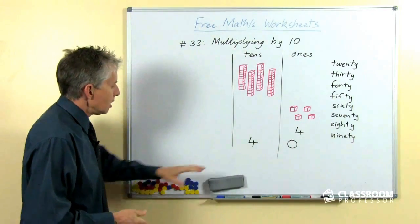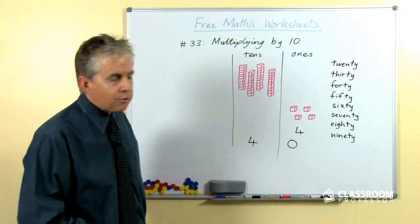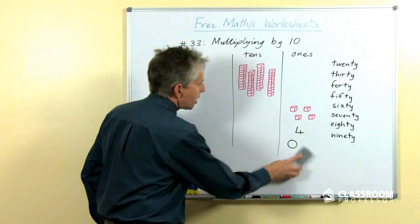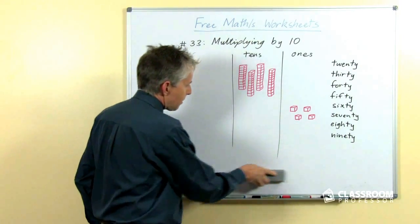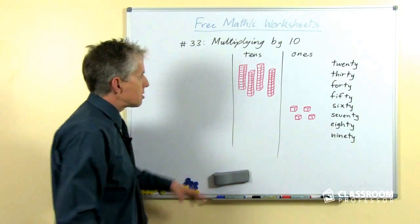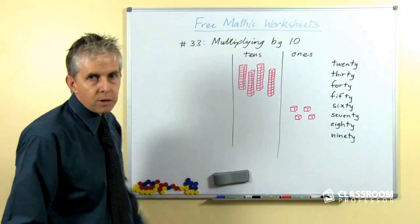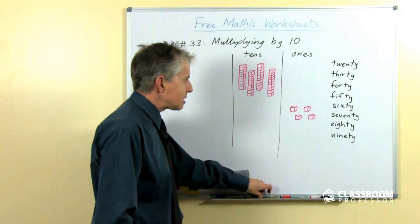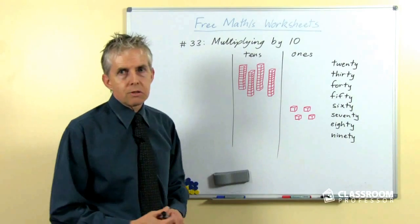This is the second strategy — we've already covered doubles — and multiplying by 10 is the next easiest strategy.